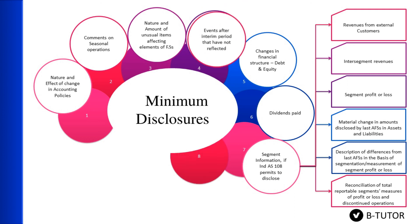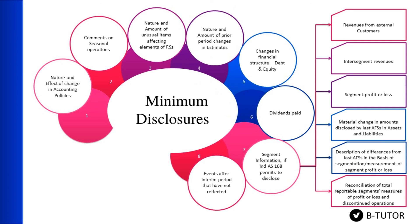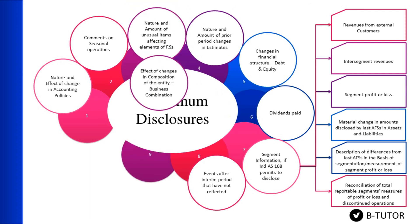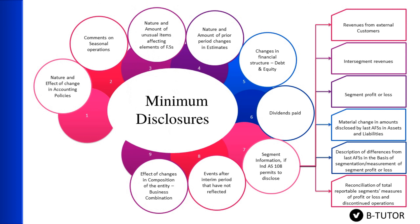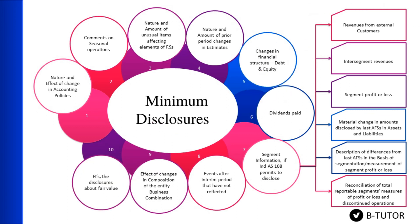Number eight: events after the interim period that have not been reflected in the financials. Number nine: effects of changes in composition of the entity, such as business combinations under IAS 103. Number ten: financial instruments disclosure — fair value must be disclosed. Last point: entities becoming or ceasing to be investing entities as defined in IAS 110. These are the minimum disclosures to be made during the interim period.